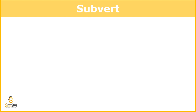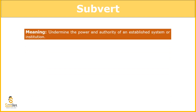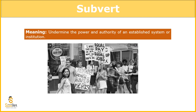So the next word is subvert. Subvert means to make any authoritative thing — whether it's an institution, a person, or a government — bow down, to overpower it. The meaning: to undermine the power and authority of an established system or institution. Like the protests that have happened time and again — for equal rights, equal pay, equality, freedom — all those protests meant to overpower, to subvert the thing which is existing and in authority.